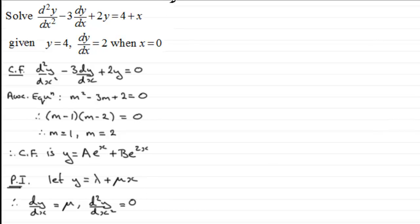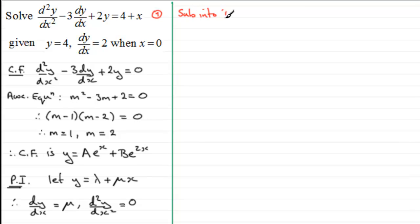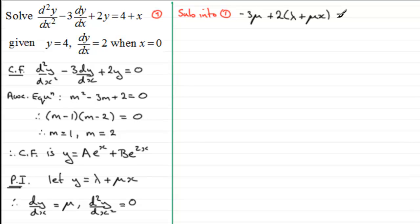Next we need to work out what lambda and mu are going to be. We do this by substituting these values into the original equation — let's call it equation 1. The first term d²y/dx² is zero. We have minus 3 times dy/dx, so that's minus 3 mu. Then plus 2y, which is 2 lots of lambda plus mu x. This equals the right-hand side: 4 plus x.